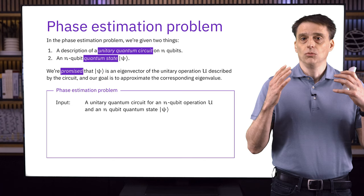Here is a plot of these probabilities as a function of theta. For example, if theta equals 1/2, the probability of outcome 1 is 1, while the probability of outcome 0 is 0. If theta equals 1/4 or 3/4, each outcome is equally likely. So we don't learn exactly what theta is from this procedure, but it gives us some information. If we're promised that theta equals 0 or 1/2, this procedure will tell us exactly which one it is. That's a simple way to use phase kickback to learn something about the eigenvalue.